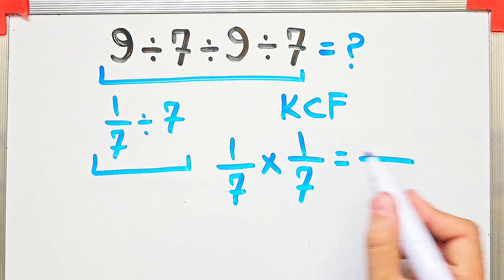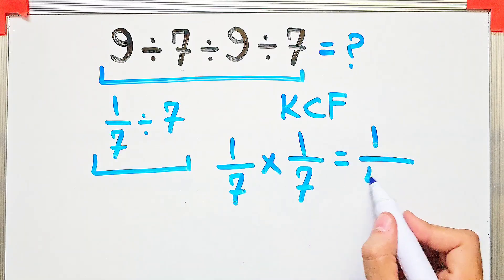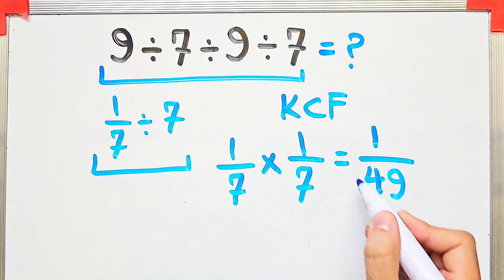1 times 1 equals 1, and 7 times 7 equals 49. The final answer is 1 over 49.